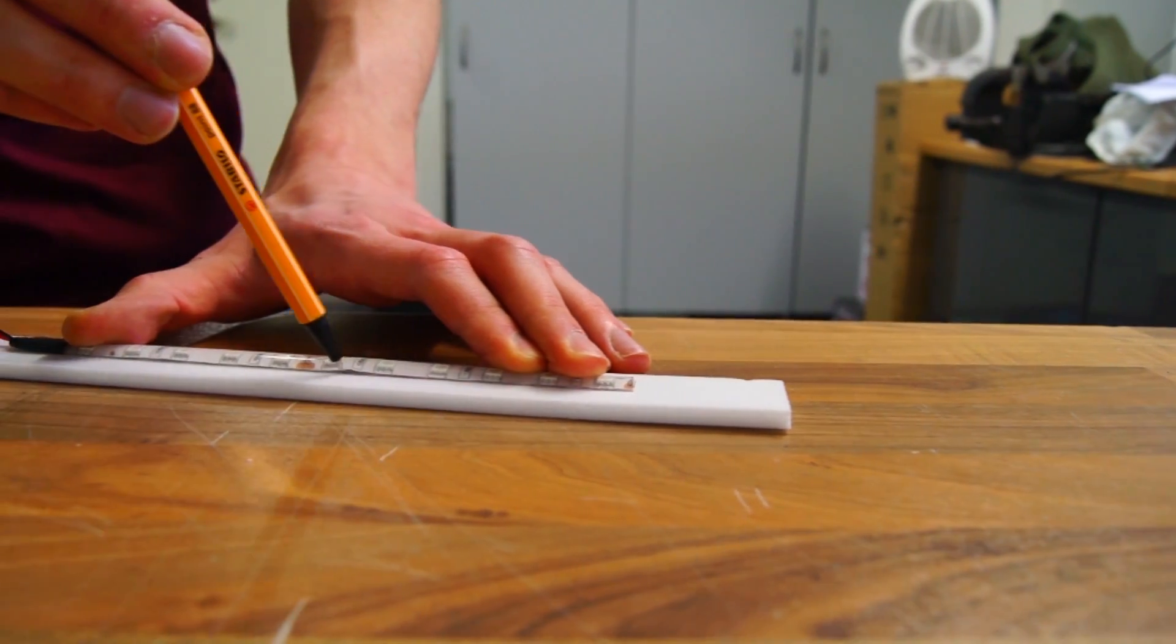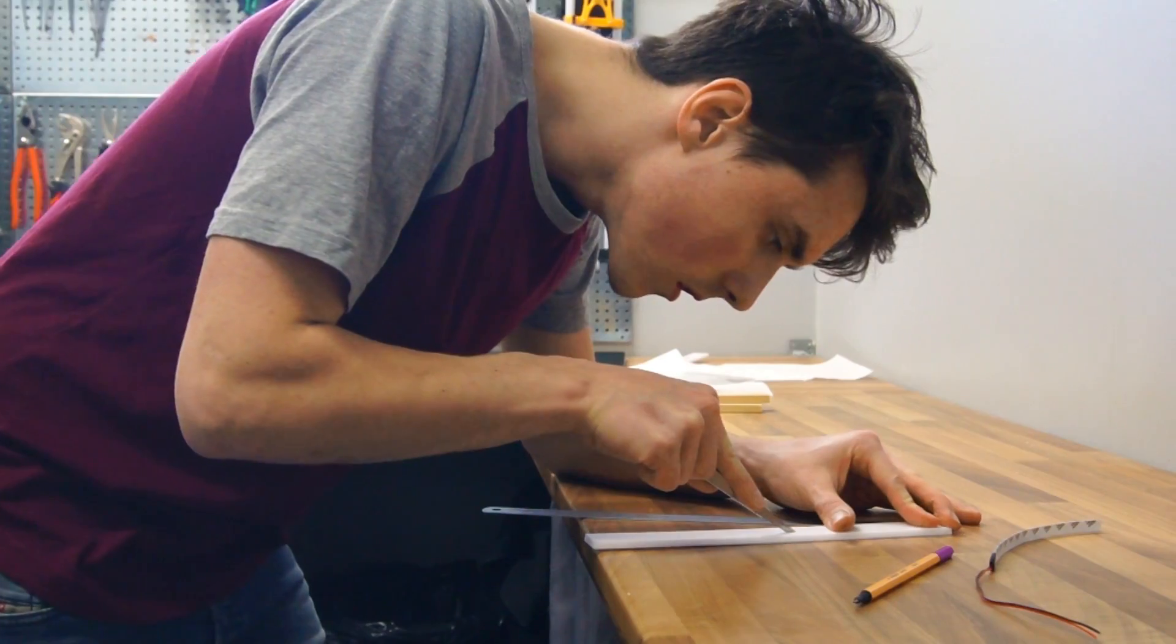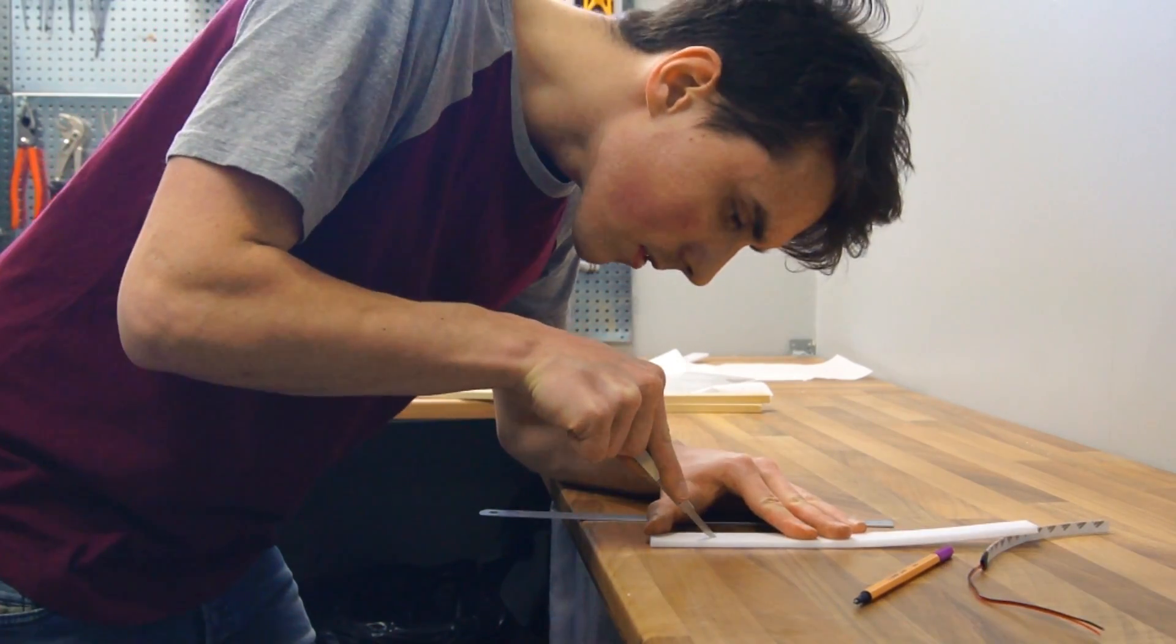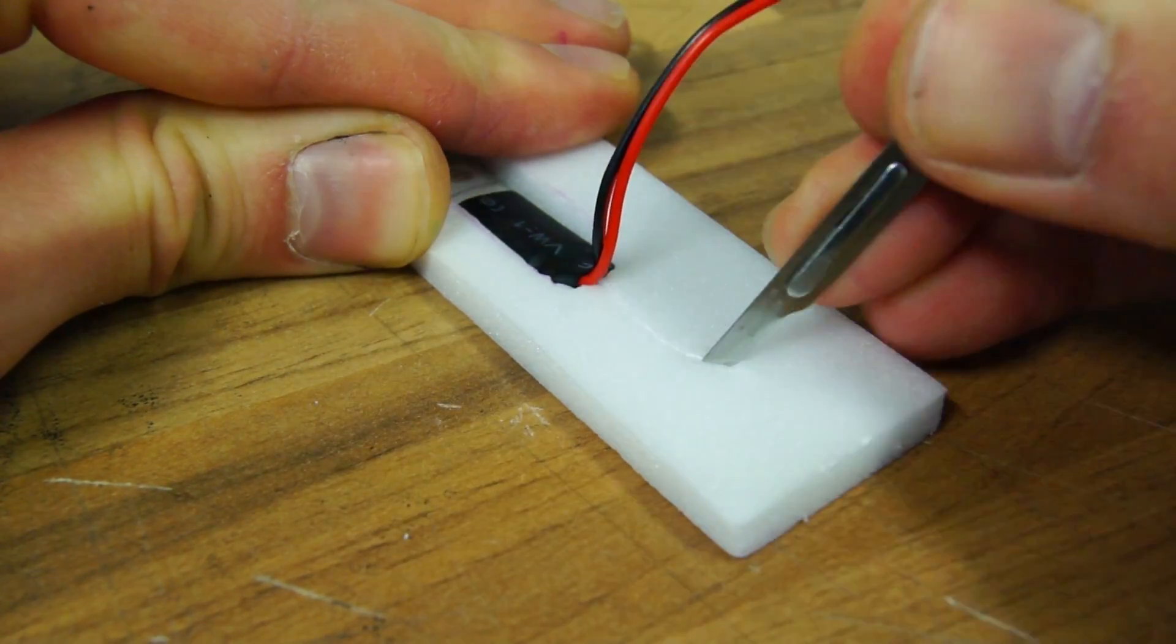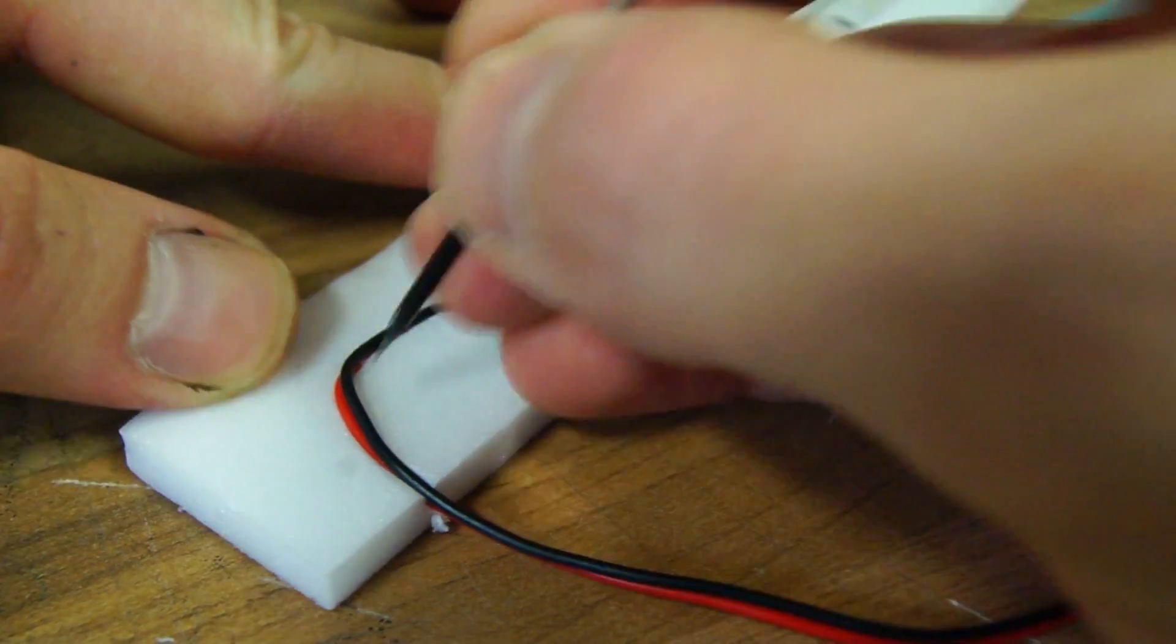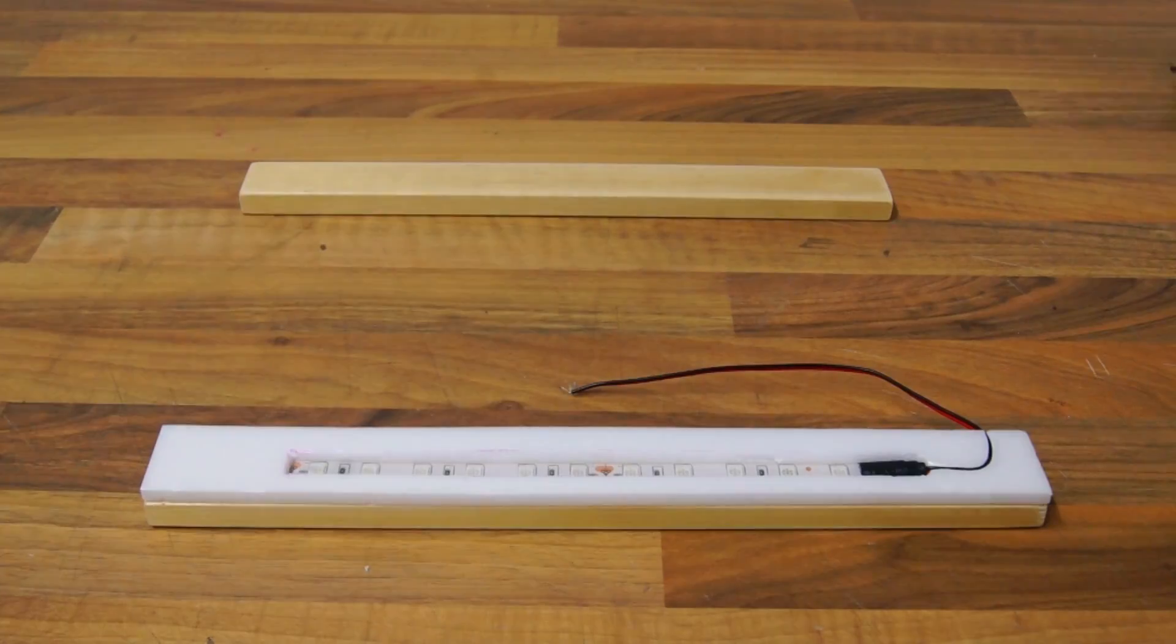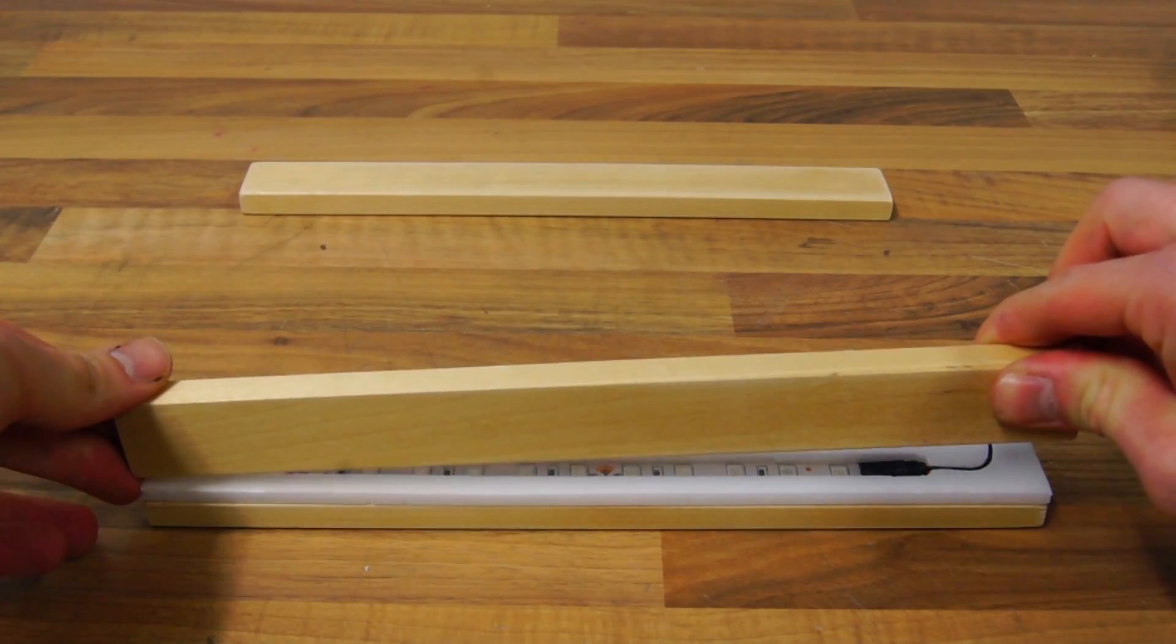With the 12 volt LED strip resting in the center of the foam, I cut out the outline and remove the excess foam. I placed the LED strip inside and made a groove for the wires to go through. I then used my hot glue gun to glue everything together.